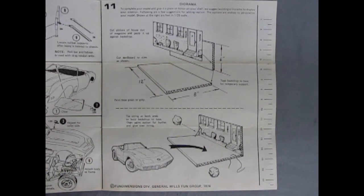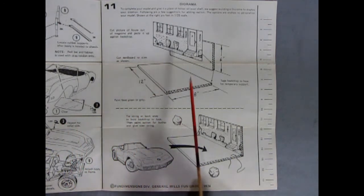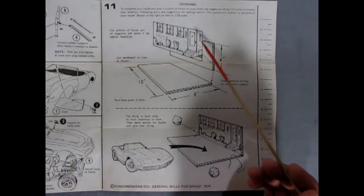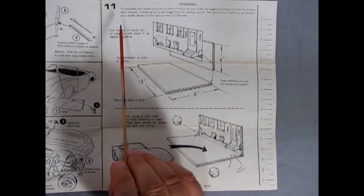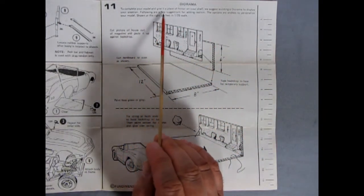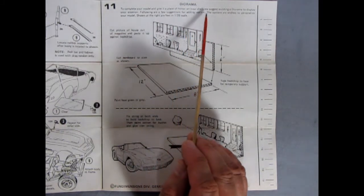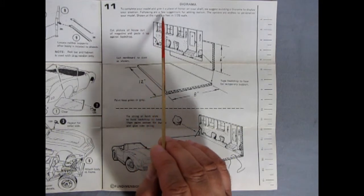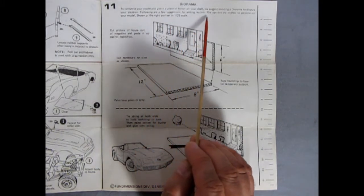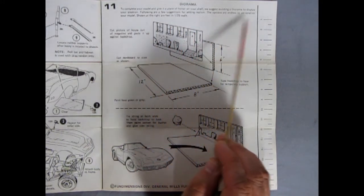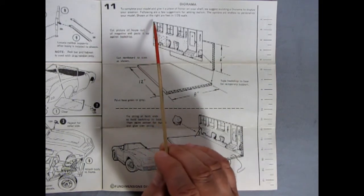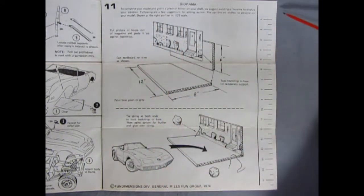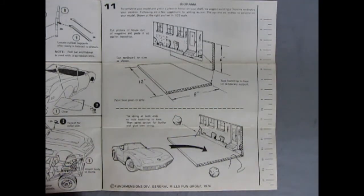And as our bonus treat of the week for 1974, we have this really groovy diorama idea. Now, unfortunately, we don't get these pieces in the kit. However, it does say to complete your model and give it a place of honor on your shelf, we suggest building a diorama to display your creation. Following are a few suggestions for adding realism. The options are endless to personalize your model. Shown at the right are feet and 1/25th scale down here, this ruler. The groovy.